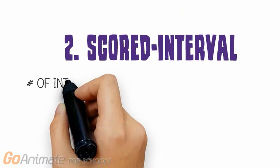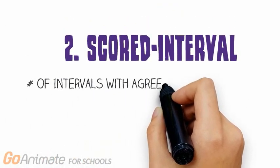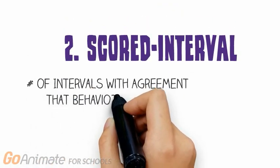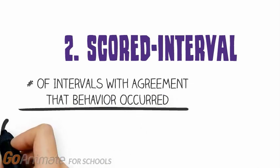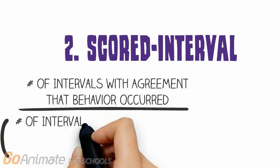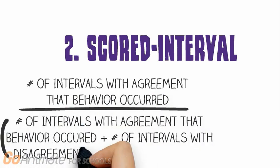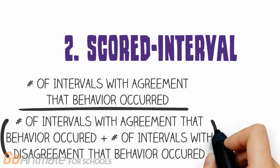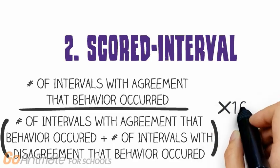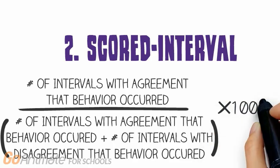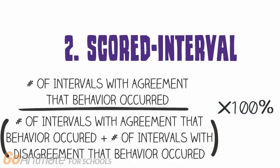Scored interval IOA uses only the intervals in which one or both observers recorded the occurrence of the target response. Intervals in which neither observer reported a target response are excluded from the calculation to provide a more stringent agreement statistic.